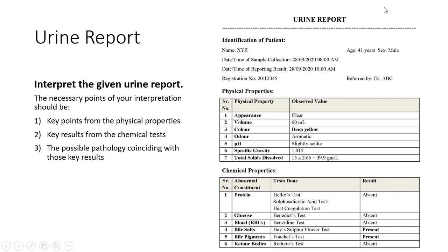The key points of your interpretation should cover: key results from physical properties, key results from chemical tests, and the possible pathology coinciding with these results. The standard urine report format contains patient identification — name, age, date and time of sample collection, date and time of reporting results, registration number, and referred-by doctor.